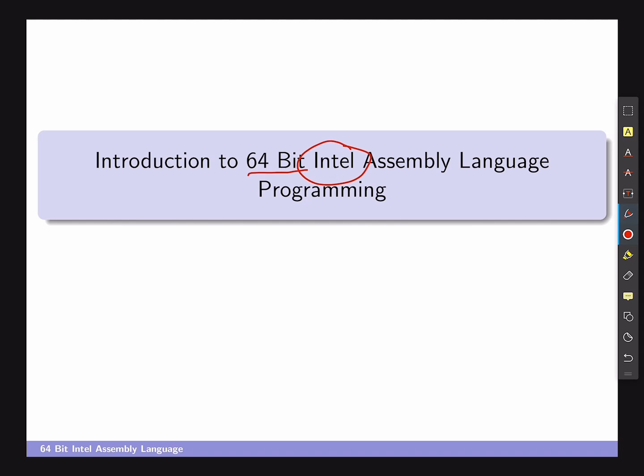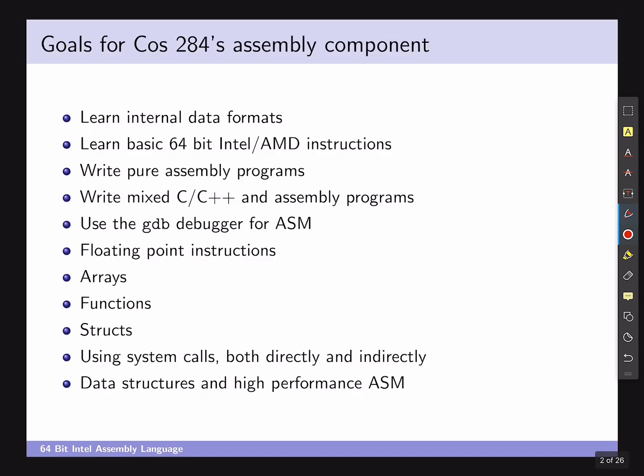So what are our goals for this part of the content? One goal is to learn internal data formats. While that's not the focus of the assembler component, it is important to understand how your data is represented when working in assembler — for example, understanding how integers and floating point numbers are actually stored at a bit level is very important to effective use of assembler programming. That's where we can merge chapter 2's theory material with the application.